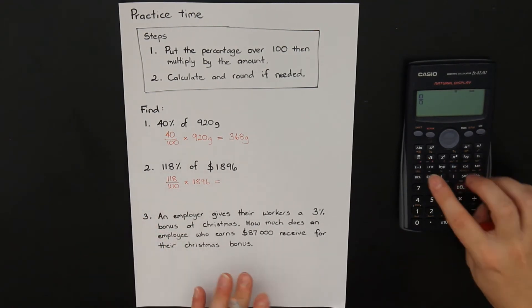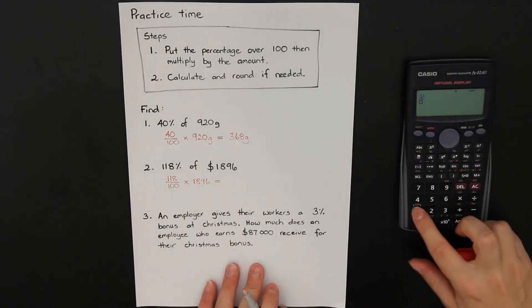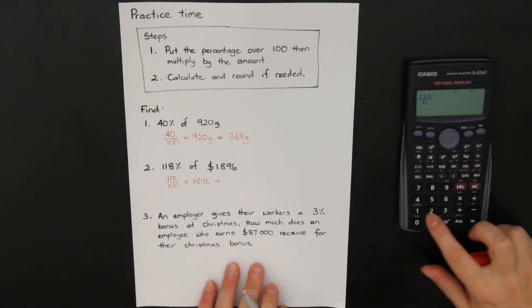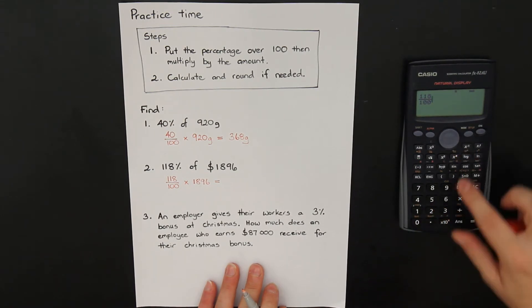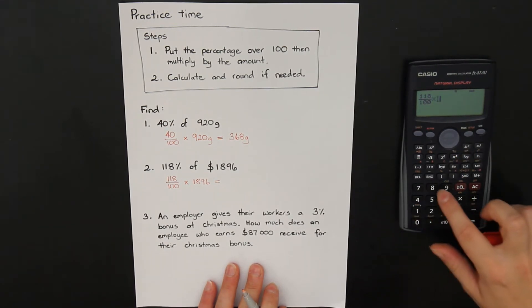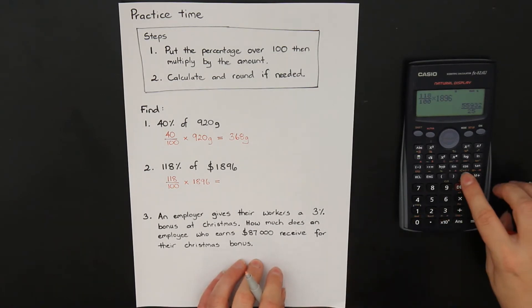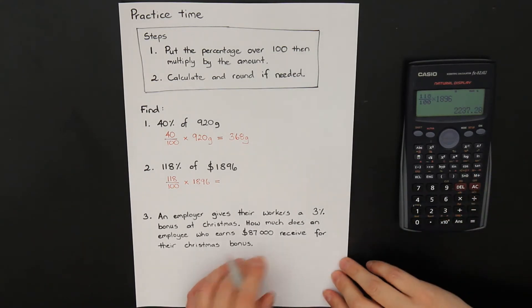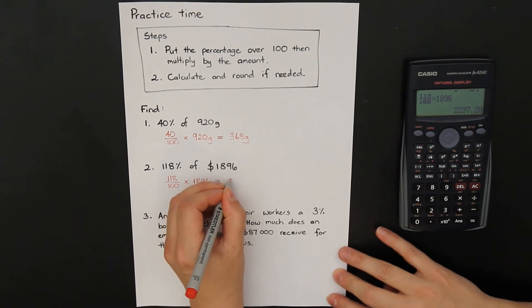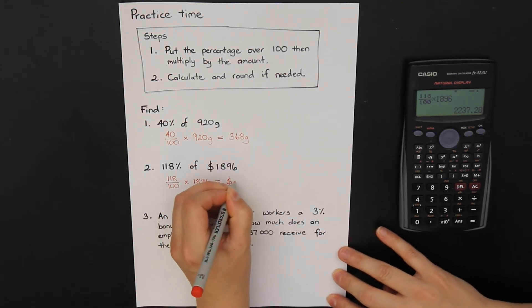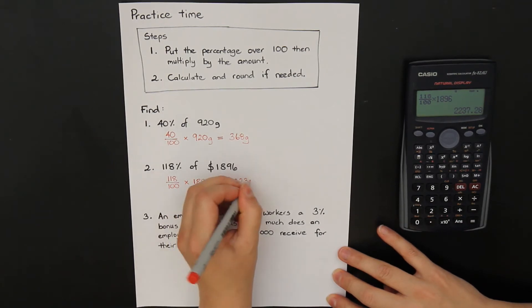On the calculator, fraction button, 118 over 100 times by 1896 equals, oh, that gave me a fraction, so I pushed my button to make it a decimal, $2237.28.